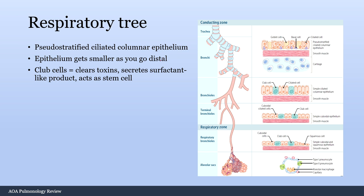Next, the respiratory tree has two important parts: the conducting zone, where there is no gas exchange — just moving air to the alveoli — and the respiratory zone where gas exchange occurs. The key epithelium in the conducting zone is pseudostratified ciliated columnar epithelium. As you go distally, the epithelium transitions from pseudostratified ciliated to simple ciliated, cuboidal, then simple squamous. Club cells, located in the conducting zone and respiratory bronchioles, clear toxins, secrete a surfactant-like product, and act as stem cells.